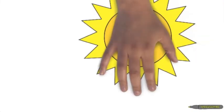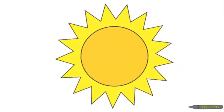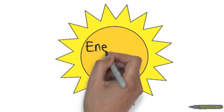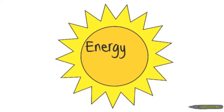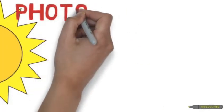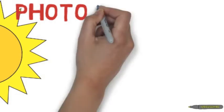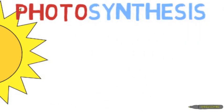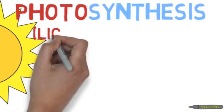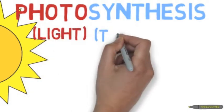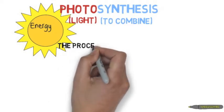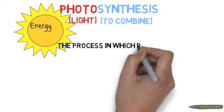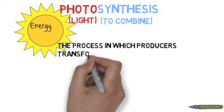Let's begin by talking about the Sun. The Sun is the original source of energy in an ecosystem. We can trace back all energy an organism gets back to the Sun, and this is because of photosynthesis. Photo means light and synthesis means to combine.